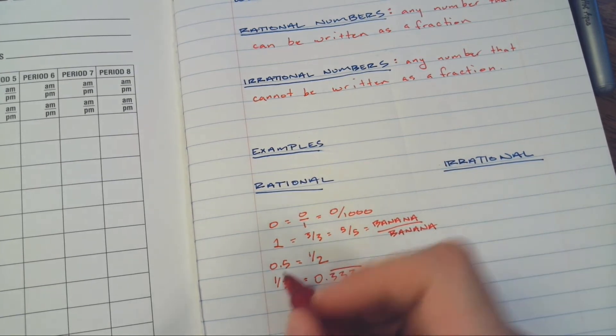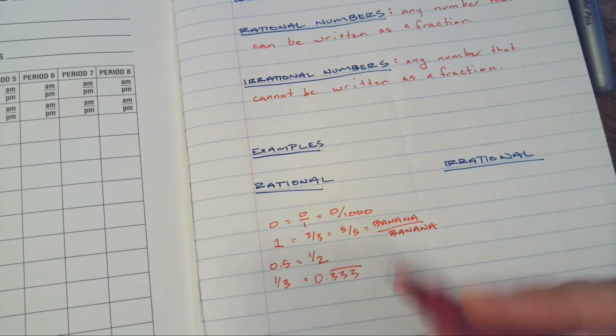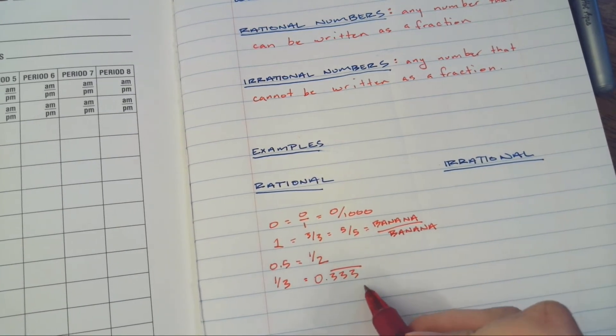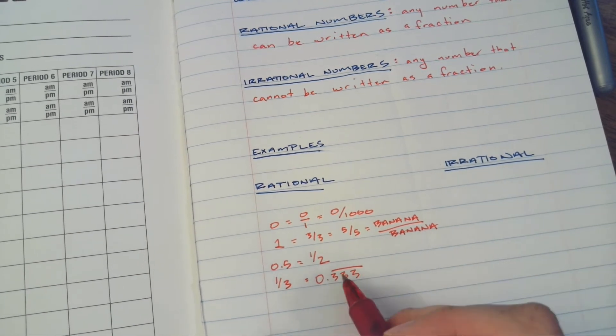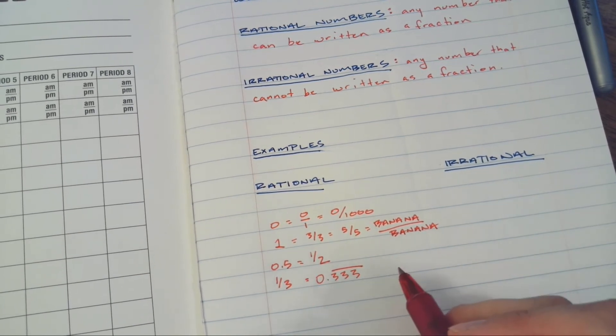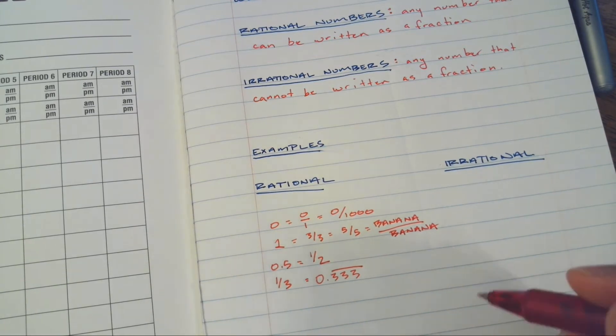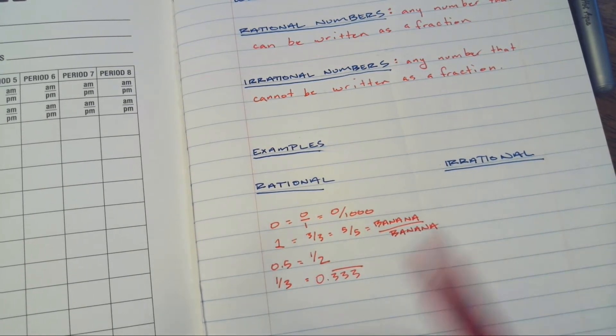And therein lies the biggest difference between rational and irrational numbers. Rational numbers either terminate - they end, like 0.5 - or they go on forever but it's a pattern, they repeat. One-third does go on forever, but it's three over and over again. So those things have a pattern, they can be written as fractions, they are rational.